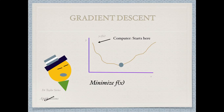You might ask: why did we have to move in small steps? The reason is that the tangent only approximates the function in a very small neighborhood around the point you are interested in. For me as Dr. Taylor Series, this is a very personal matter — the reason why tangents approximate functions around small points is because of the so-called Taylor series expansion theory, which comes from the Republic of Calculus.